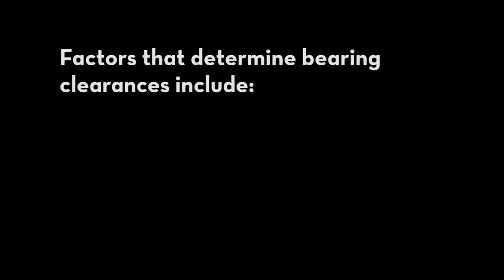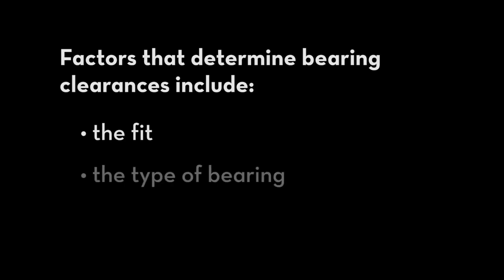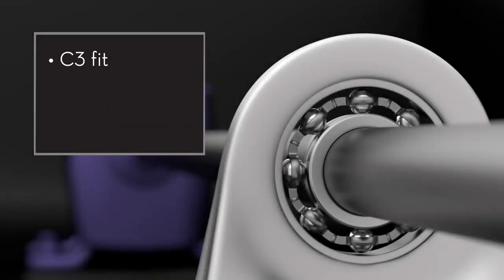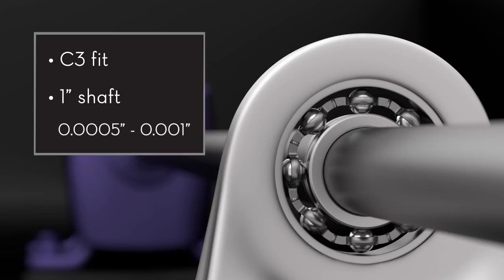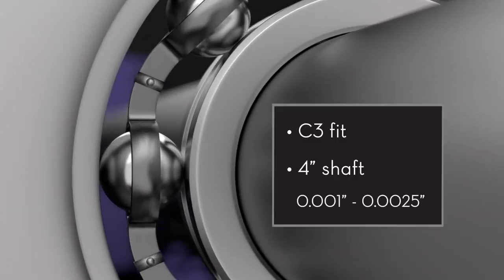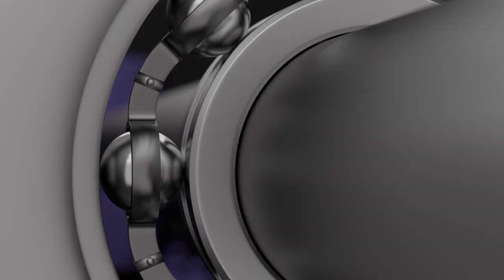Factors that determine bearing clearances include the fit, the type of bearing, and the diameter of the shaft. With a C3 FIT and a one inch diameter shaft, the clearance is between half a thou and one thou. With a C3 FIT and a four inch diameter shaft, the clearance is much larger, between one thou and two and a half thou.